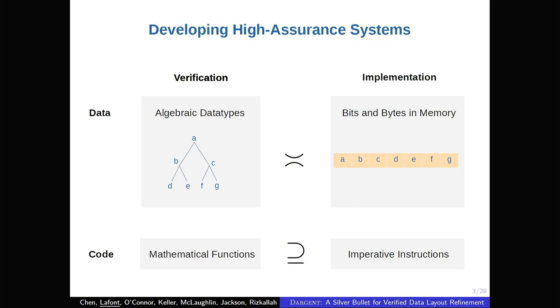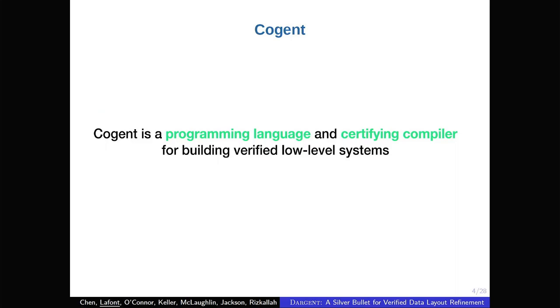So you need to bridge the gap in order to get a nice verification story. And so what I'm going to talk about here is the link between the algebraic data types that you reason about and the bits and bytes that you have to store in memory according to a specific layout. And for relating the implementation and mathematical specification, there is a bunch of related work already, and I'm going to focus on Cogent, because it comes with a certifying compiler.